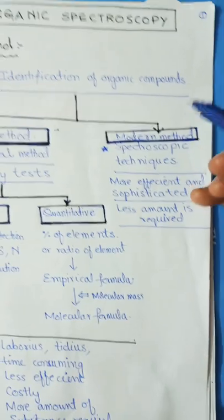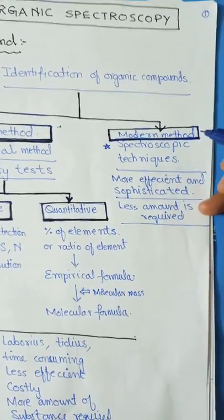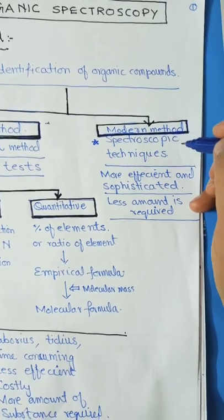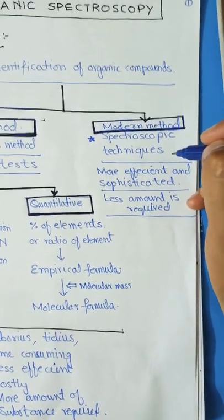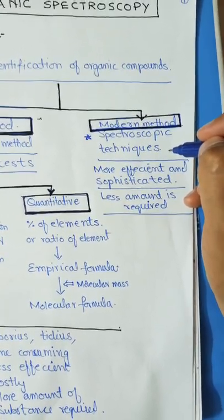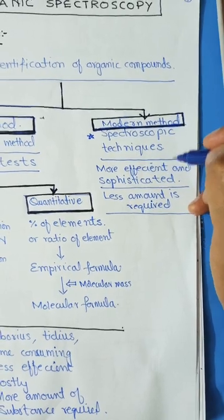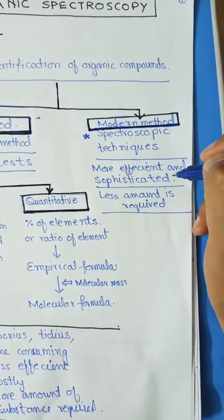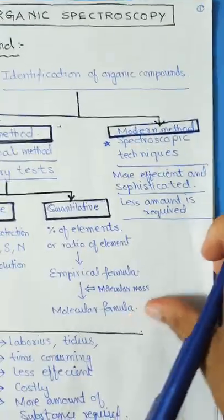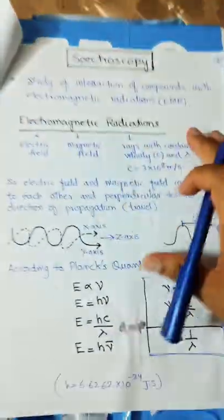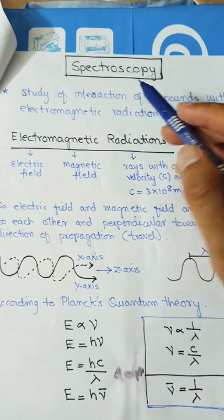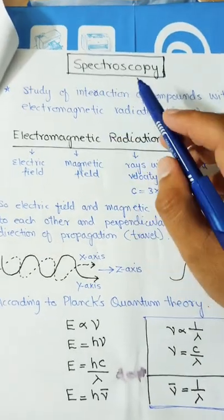The modern methods now used for the detection and identification of compounds are spectroscopic techniques. These spectroscopic techniques are used to identify organic compounds. These methods are more efficient and sophisticated, and only a minimum amount of substance is required for analysis.